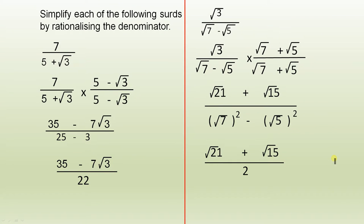Simplify each of the following surds by rationalizing the denominator. So this is the original sum here. So we multiply the top and the bottom by the conjugate surd of 5 plus the square root of 3. And that's there. So the next line is here. 7 fives of 35 minus 7 the square root of 3.